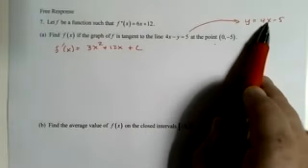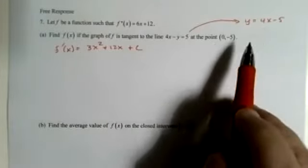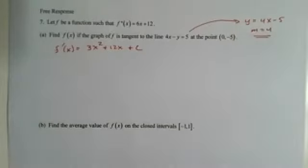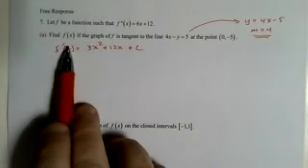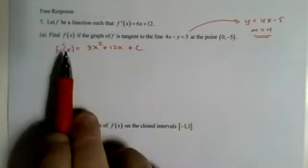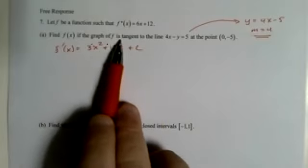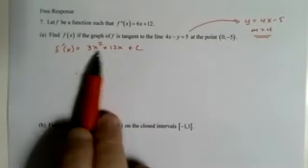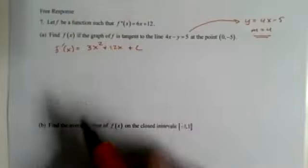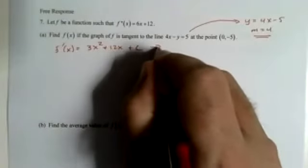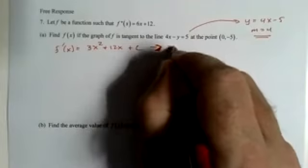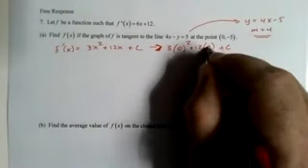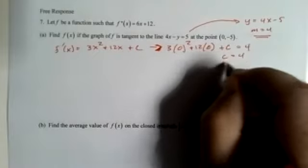Yeah, I got to find the slope here. So, y over 5 over y equals 4x minus 5. At the point 0, 5, I plug in 0, I get out negative 5. Nice. So, m equals 4. If f is tangent to the line, at that point, when x equals 0, the slope is 4. That's confusing stuff. Why did I do that? That's weird. 3 times 0 squared plus 12 times 0 plus c equals 4. C equals 4.